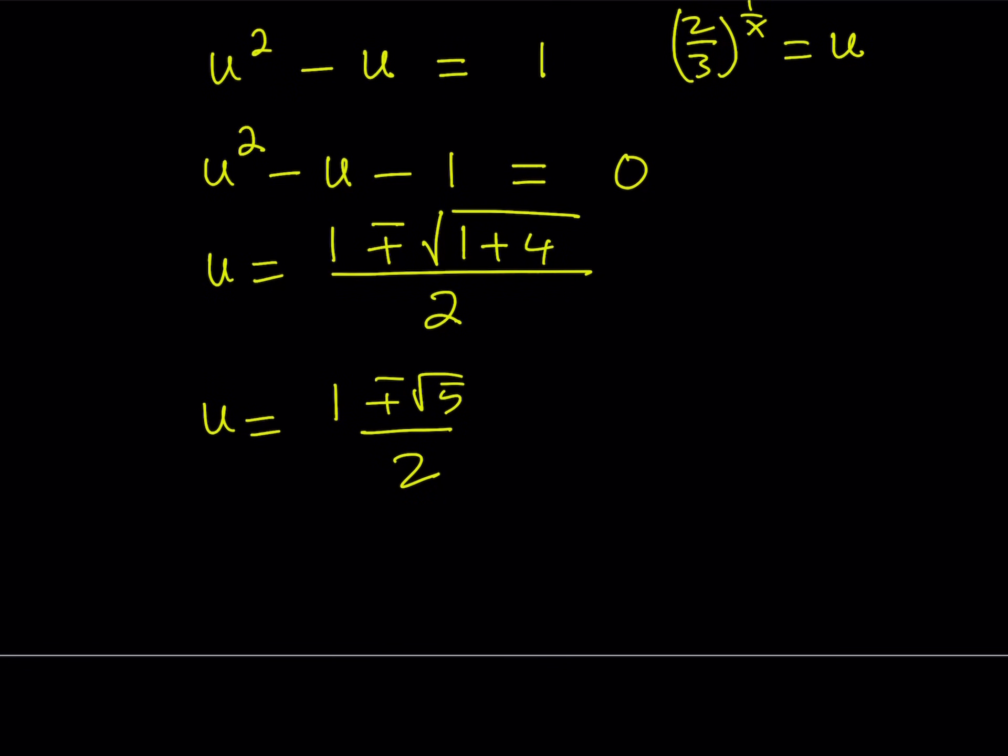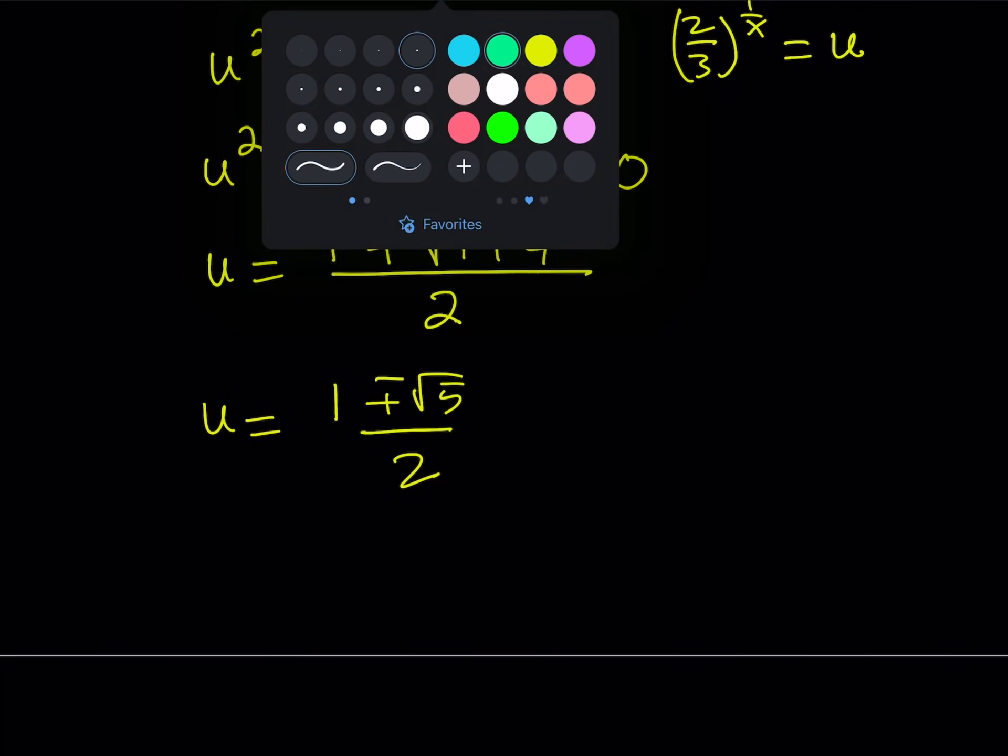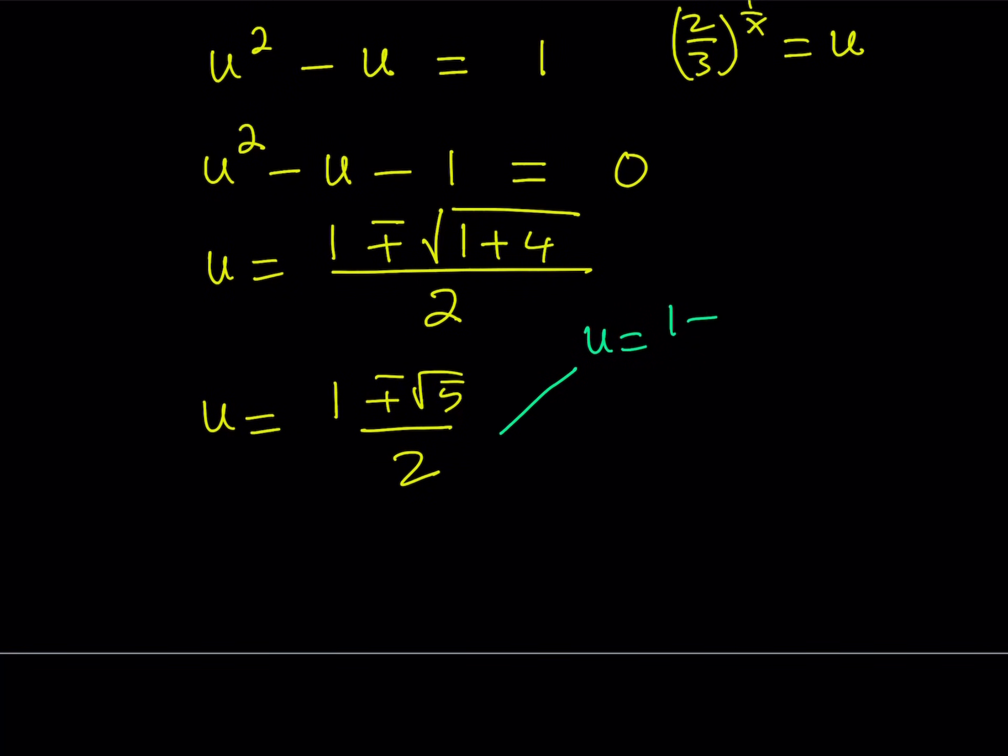Now, from here, we get two solutions. Obviously, let's go ahead and separate them. And then, we're going to back substitute. Because u is not what we're trying to find. We're trying to solve for x. So, one of the solutions here is going to be u is equal to 1 plus root 5 over 2. And the other solution is going to be 1 minus root 5 over 2. So, this equation has two solutions. And yes, you're right. It is the golden ratio. So, this is a golden exponential equation.